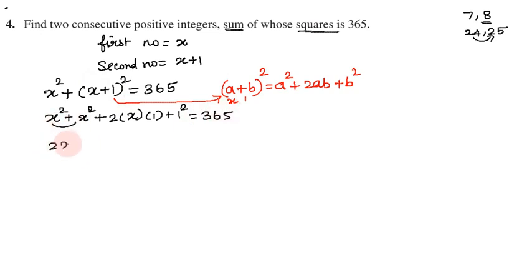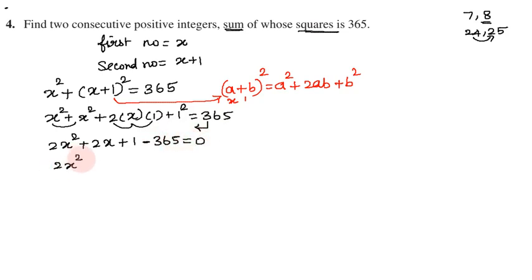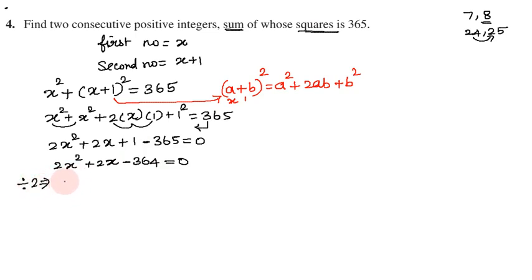x squared plus x squared gives 2x squared. 2 into x into 1 is 2x. 1 squared is 1. So 2x squared plus 2x plus 1 equals 365. Moving 365 to the left: 2x squared plus 2x plus 1 minus 365 equals 0, which gives 2x squared plus 2x minus 364 equals 0. Dividing all terms by 2.